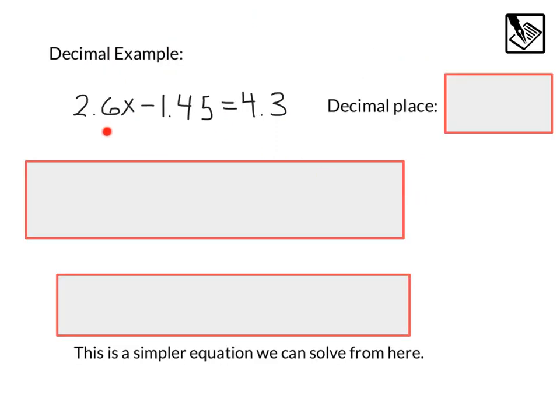Let's take a look at a decimal example. Here we've got 2.6x minus 1.45 equals 4.3. Now our decimal place here, this 2.6, that's in the tenths place. This 1.45, that's a hundredths place, and 4.3 is in the tenths place. We need to go to the biggest one, so we're going to use the decimal place in the hundredths place.